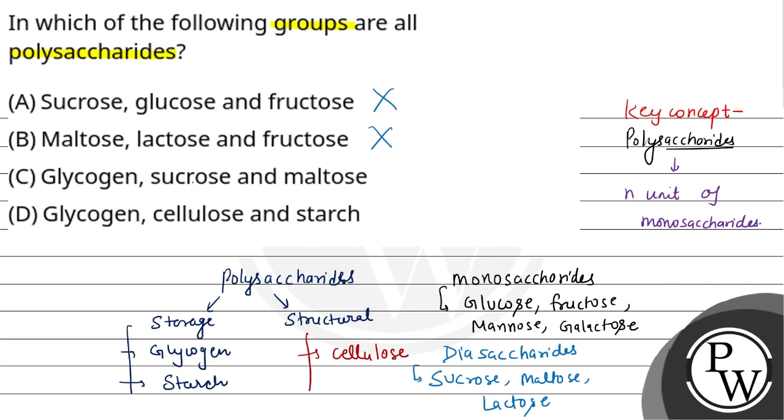Glycosin is polysaccharides, but sucrose is disaccharides, and maltose is also disaccharides. But in option D, glycosin, cellulose and starch, all three are polysaccharides.